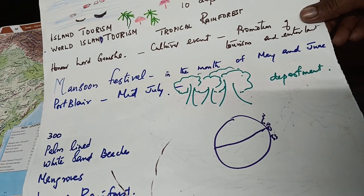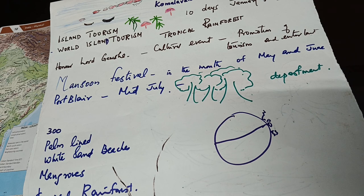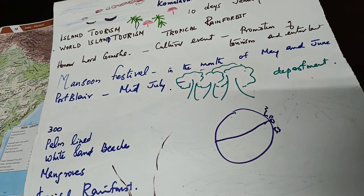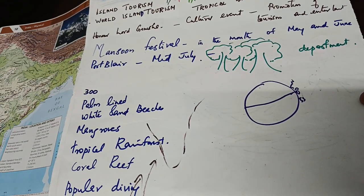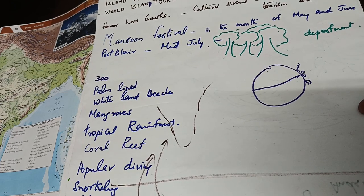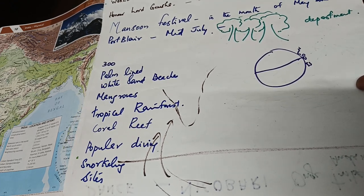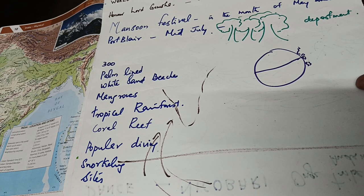When we talk about the island tourism, several other festivals are also related — festival of beach, festival of music, festival of food, festival of monsoon, film festival. Most often all these are related to the beaches. The region is famous for roughly 300 islands, palm-lined coastal areas, white sand beaches, mangroves, tropical rainforests, coral reefs, and it is a popular diving and snorkeling site.